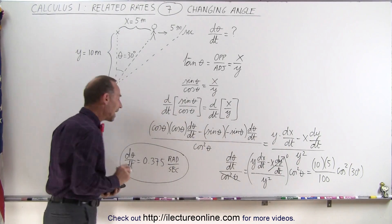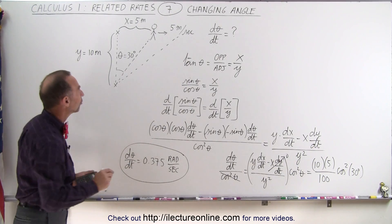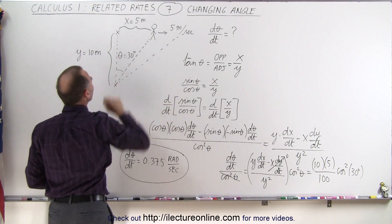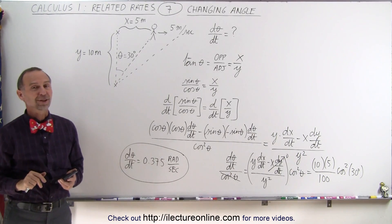And so that is how fast the angle is changing at this moment, if the person is walking at 5 meters per second, and when the angle is 30 degrees. And that's how it's done.